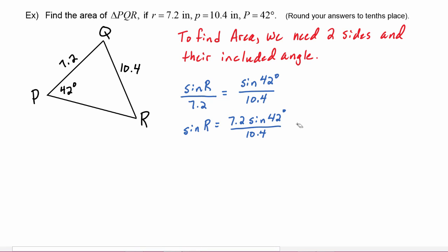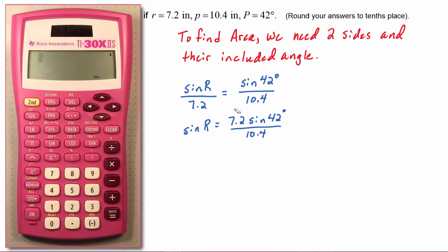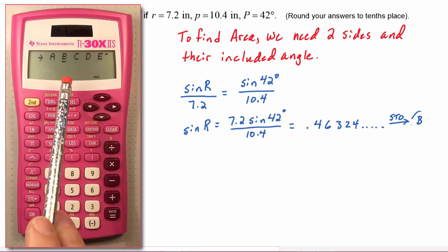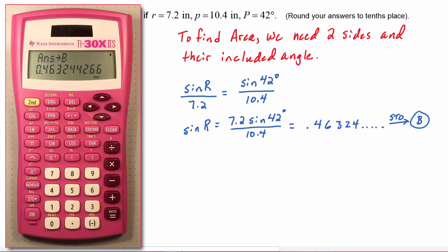Now we might want to go ahead and calculate this with our calculator. So we would take 7.2 times the sine of 42, close your parenthesis, divided by 10.4, enter. And we see that this is 0.46324 et cetera, so we can store that in whatever memory location you want to, maybe we put it in B this time.